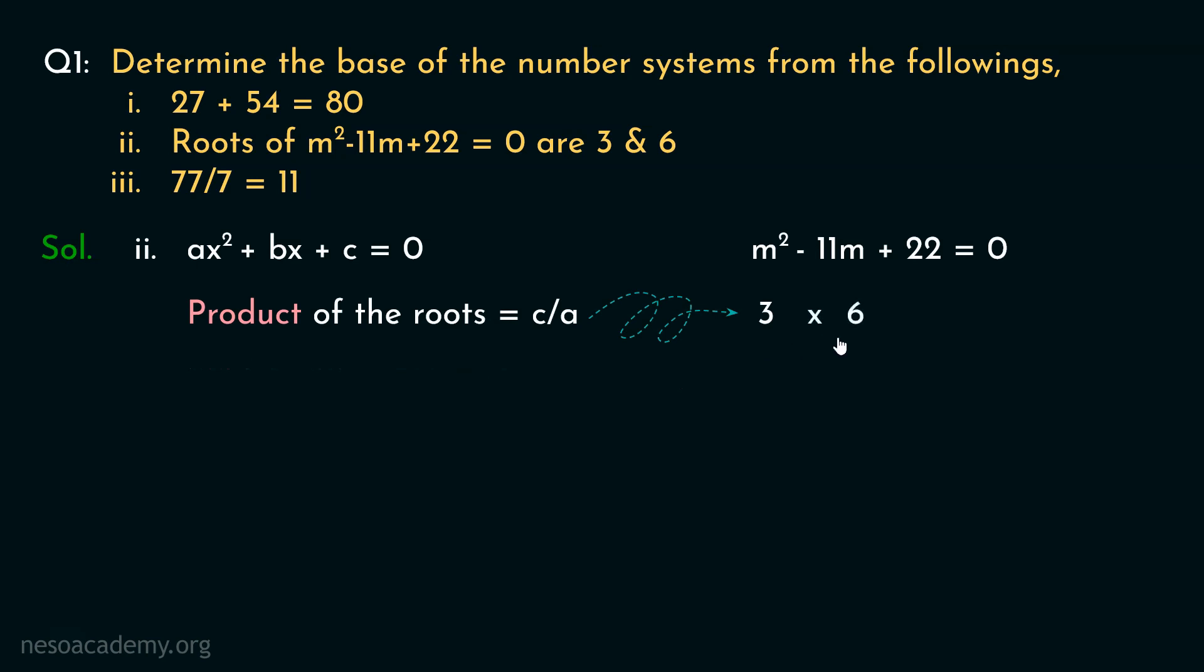So 3 into 6, that is the multiplication of the roots of this equation, will derive c, that is 22 in this case, by a, that is 1, because here the coefficient of M squared is 1. Now we don't really know the base, so let's assume that the base is b. Let's now convert this into decimal. So 3 base b will be 3 into b raised to the power 0. Then 6 base b will be 6 into b raised to the power 0. This is actually 22 base b. So 22 base b will be 2 into b raised to the power 1 plus 2 into b raised to the power 0. And finally, 1 will be 1 into b raised to the power 0.